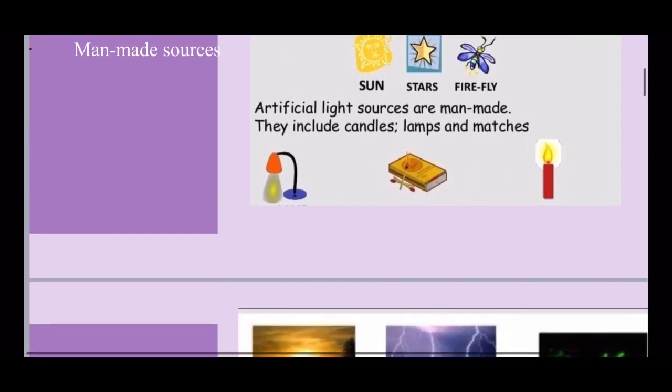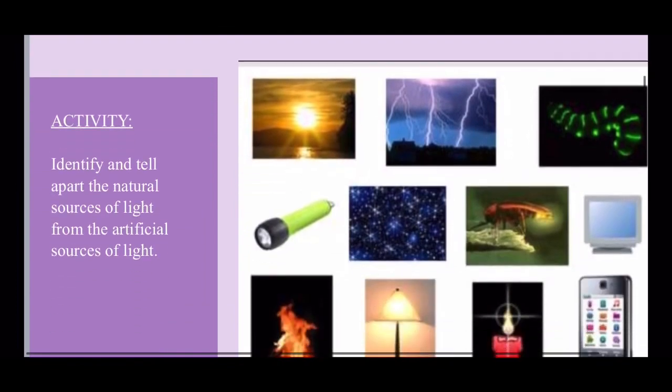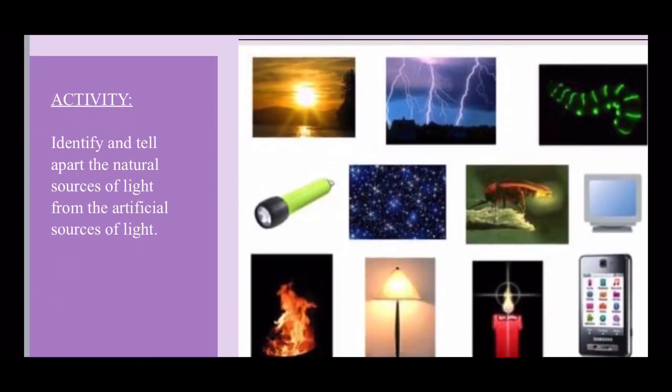You can distinguish the natural sources from the artificial sources. In the picture, so many objects are given: the sun, light before thundering, fluorescent insects, a torch, stars, a firefly, a desktop, fire, a table lamp, a burning candle, and a mobile phone. You have to tell apart the natural sources of light from the artificial ones.